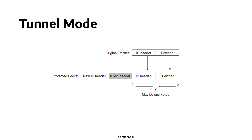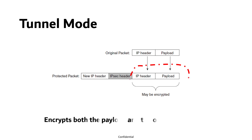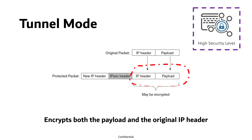Tunnel mode encrypts both the payload and the original IP header, encapsulating the entire IP packet and adding a new IP header. It offers a high level of security because the IP addresses of the original packet are carried within the secure payload of an IPsec packet.